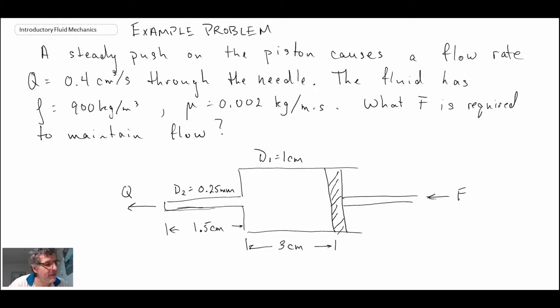So let me write out the problem statement. In this problem, we have a syringe filled with a fluid. The fluid is being forced out through a very small diameter needle section that has a diameter of 0.25 millimeters. We are given the volumetric flow rate, Q = 0.4 cm³/s, and the fluid has ρ = 900 kg/m³ and μ = 0.002 kg/(m·s). We are asked to determine what force F is required to maintain a steady flow rate.